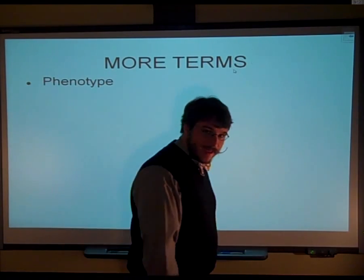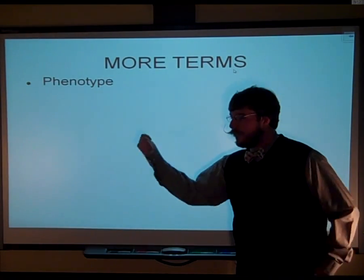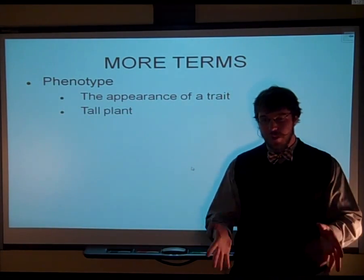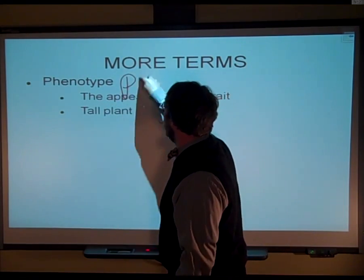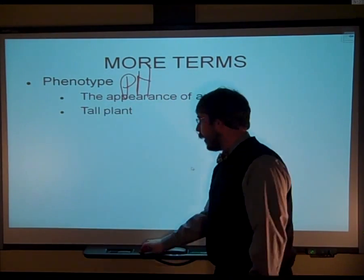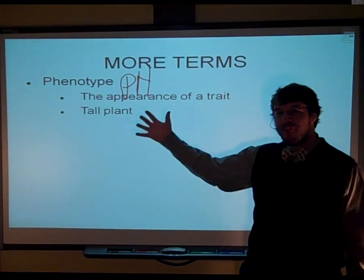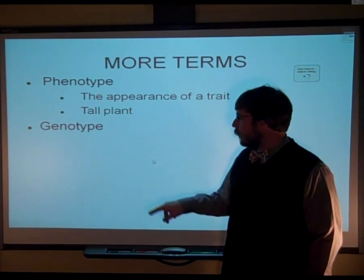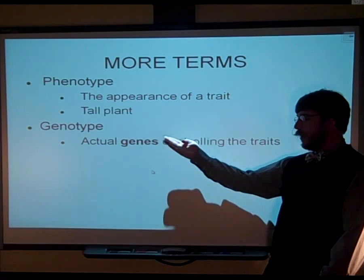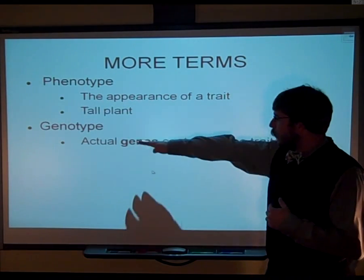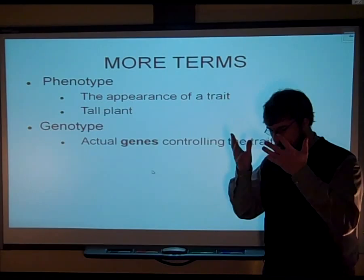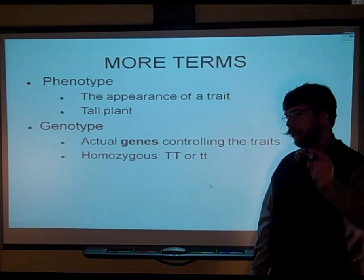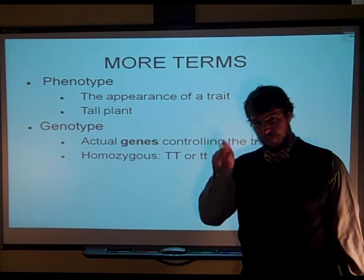We need to throw some more terms at you. First: phenotype. The phenotype is the physical appearance of the trait. And then there's also the genotype — these are the actual alleles or genes that are controlling those traits. This is what you don't see unless you could get down into the DNA and actually look at the gene and say, 'Yep, that's the yellow gene' or 'that's the green gene.'